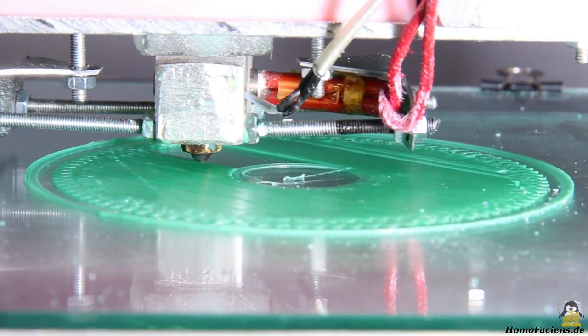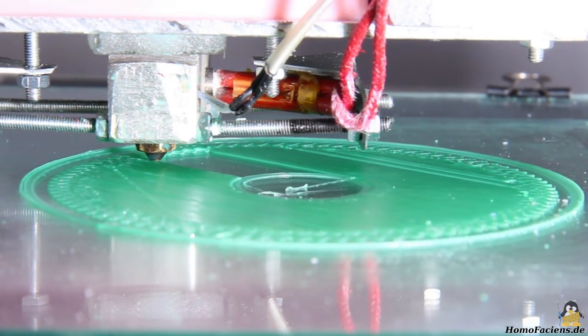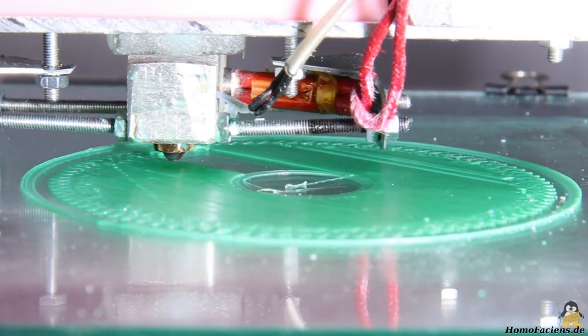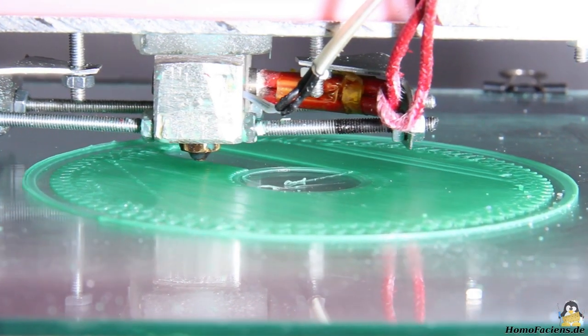Version 3 of my direct extruder prototype is now working quite well. Even large print jobs are processed without any problems. Here I print the main gear of the extruder, as the original part has to be replaced due to wear.